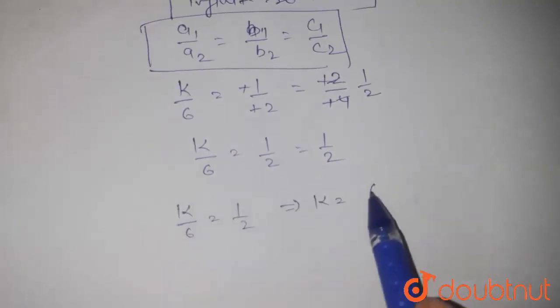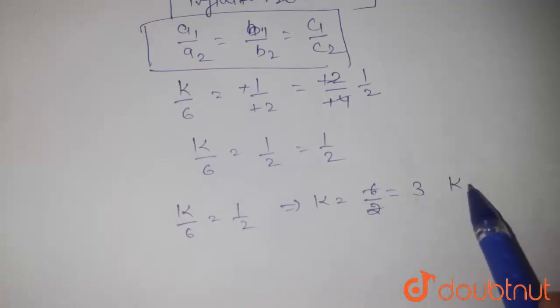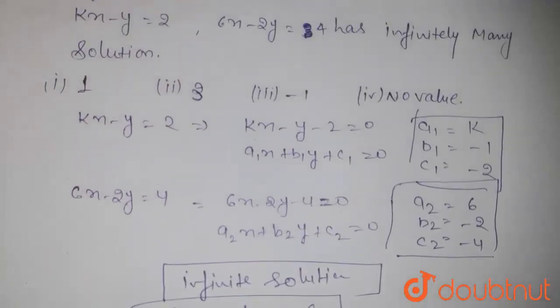Using k upon 6 equals 1 by 2, we get k equals 6 by 2 which equals 3. Therefore, the value of k equals 3. Looking at the options, option number 2 is the perfect answer. Thank you.